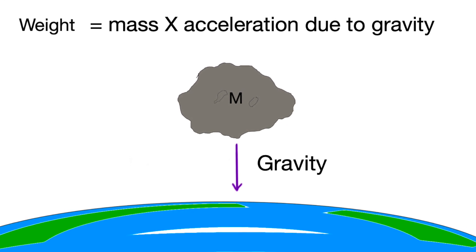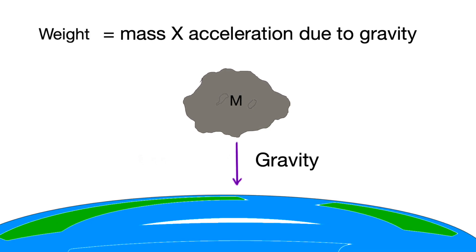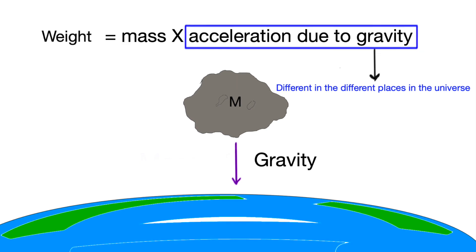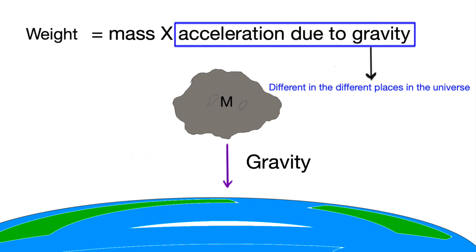We know that weight equals mass times the acceleration due to gravity. The acceleration due to gravity is different in different places in the universe. It is different on the moon, different on the earth,